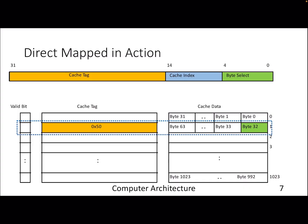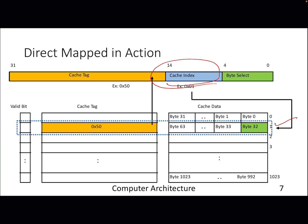Let's look at direct mapped cache in action. The processor sends the address. We extract the index bits, and based on them let's say we found line number 1. From there, we compare our tag. The data is stored in a data array and the tag is stored in a tag array. Once you get a tag hit — meaning the upper bits match and we know where the data is — then depending on the byte offset, you get the data.